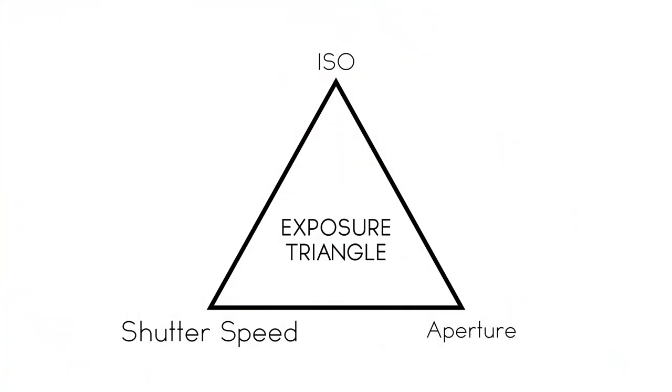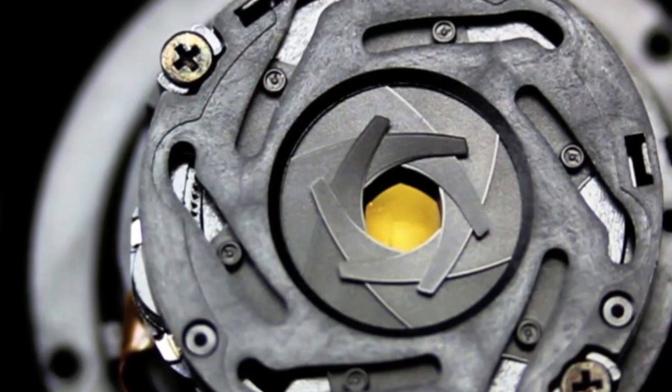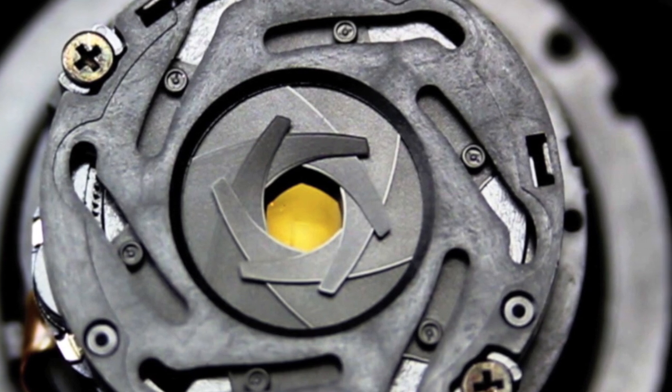Alright, so that is the first thing in the exposure triangle, which is shutter speed. We are going to move on to subject number two, which is aperture. Aperture is another mechanical device. Instead of it being in your camera body like the shutter, an aperture is inside the lens itself. In the lens there are several pieces of glass that bend the light, and in between all of that is a small metal circle that can open really wide or close really small. That aperture decides how much light gets to the shutter, and the shutter decides how long that light hits the sensor.